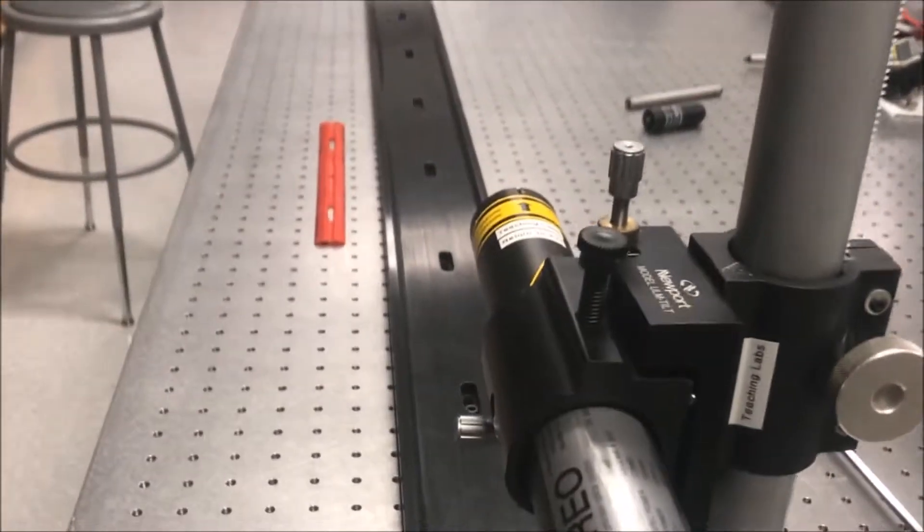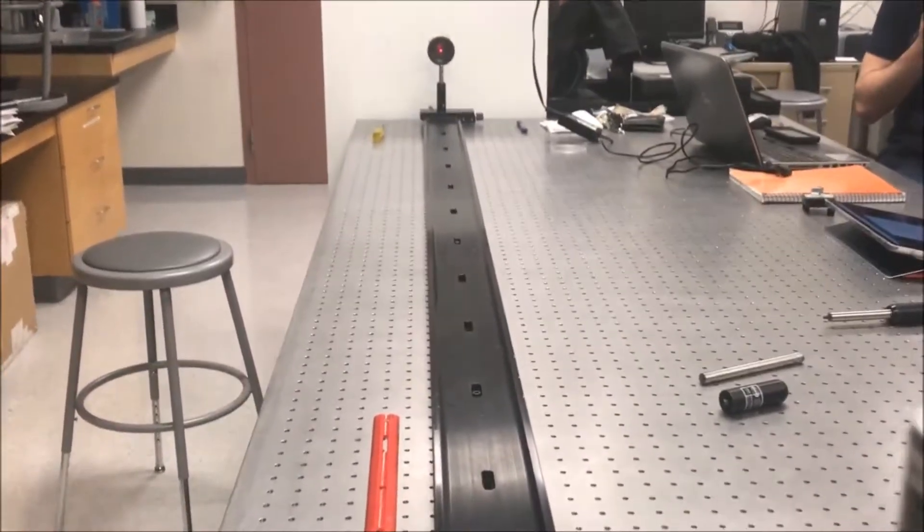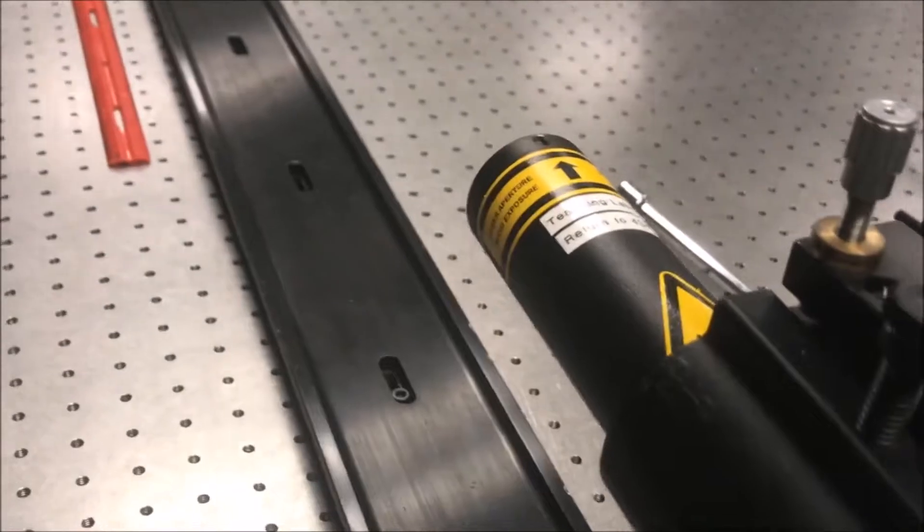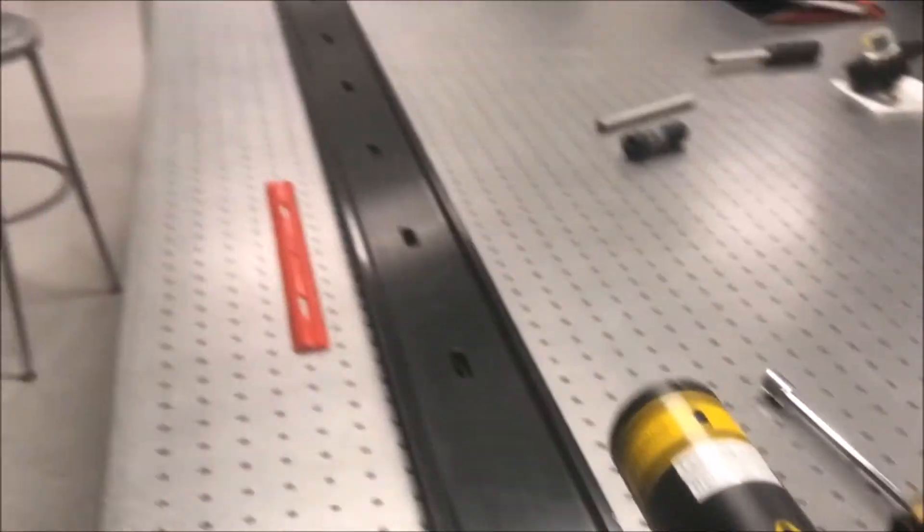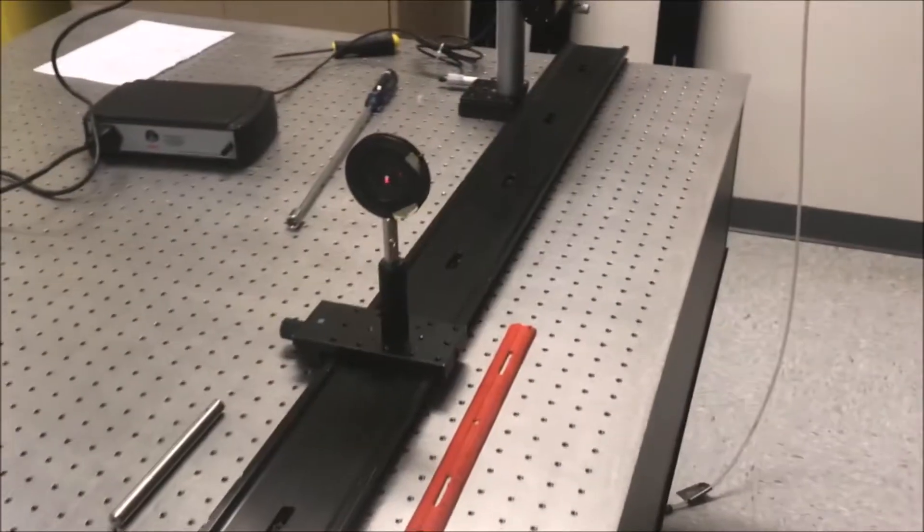Another way that we used to adjust to make sure that the laser was aligned was moving that pinhole as we just did previously, all the way down this optical rail, starting from close up to this laser, and then aligning here, and then continually adjusting until we got to the end of the rail.